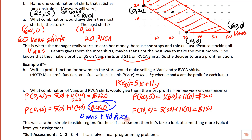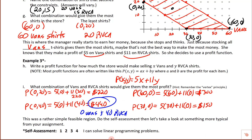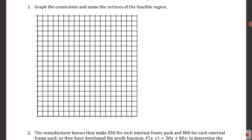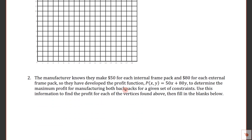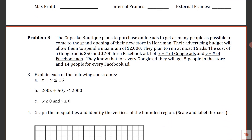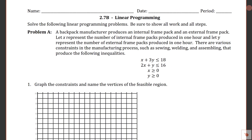Go ahead and do the self-assessment, and then we're going to take a look at a few aspects of the problems from the practice assignment. I've got the practice assignment up here — 2.7B on linear programming. Problem A describes a situation and actually gives you the inequalities that come from that situation. So whatever the limiting factors were, they give those to you. Down below there's a graph — notice it's scaled but not labeled — and then it gives some more information and asks you to figure out a maximum profit based on the type of frame.